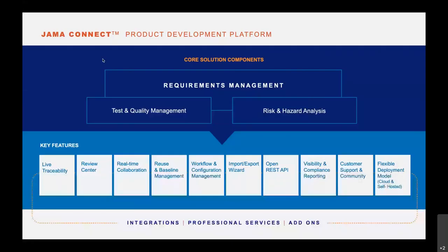Jama is the solution for product development, which includes capturing requirements and requirements management, but also activities like test and quality management, giving you end-to-end traceability, and also risk and hazard analysis — because many of our customers are using Jama for functional safety-critical work, the same way that Scade is being used. Jama is a platform that achieves these things by providing key capabilities like traceability, collaboration, reuse, and many others.